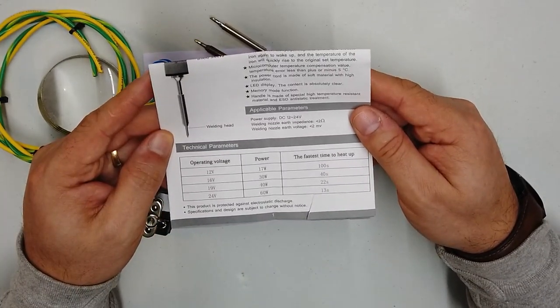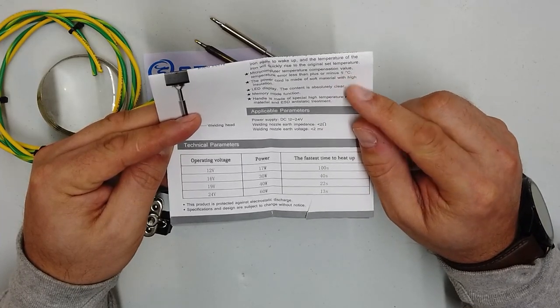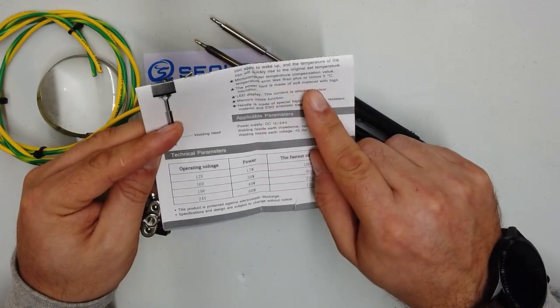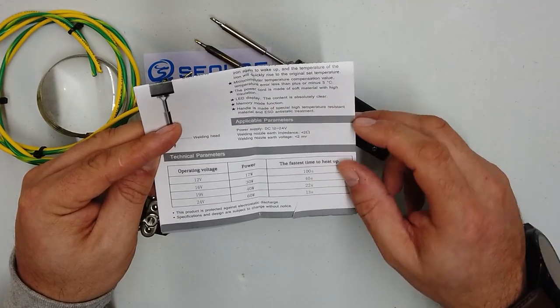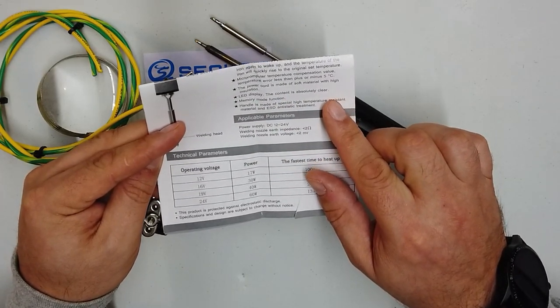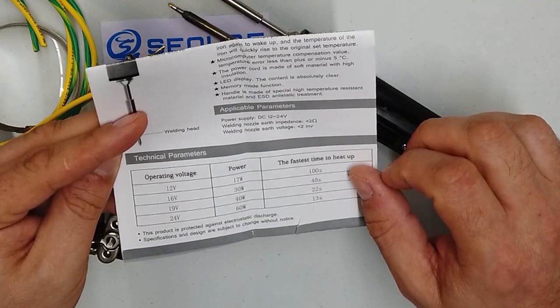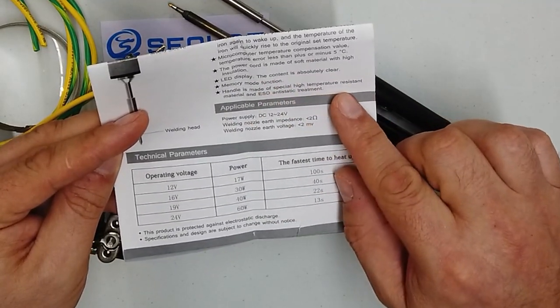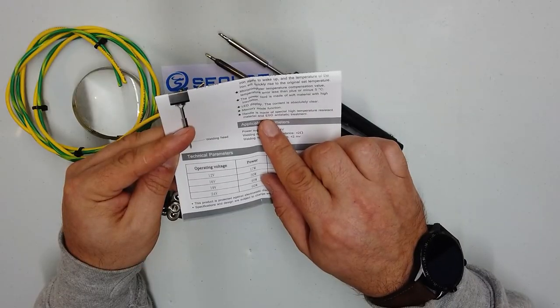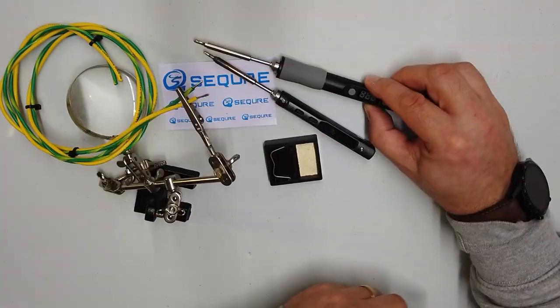Micro computer temperature compensation value. Temperature error less than plus or minus 5 degrees centigrade. That's quite cool. The power cord is made of soft material with high insulation. It's got an LED display. The content is absolutely clear. It has a memory mode function. And also the handle is made of special high temperature resistant material and electrostatic sensitive discharge. Anti-static treatment.